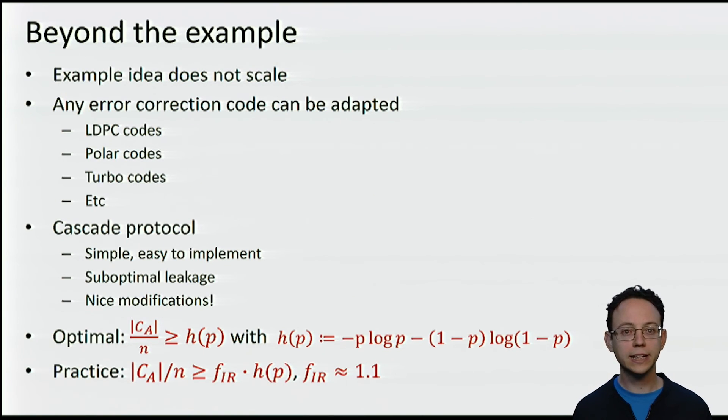Okay, so let us conclude this module on reconciliation with some final considerations. First of all, the example that we have described, well it works, but it does not scale up. If we try to extend the same ideas to a parity check matrix of n by m, we will need a table with 2 to the m entries, to decide the output of the estimator module. However, the method of reconciliation that we described can be adapted to use any family of linear codes that you like. You can use LDPC codes, polar codes, turbo codes, etc. You just need to plug a slightly adapted version of the decoder of your favorite linear code in the estimator module.